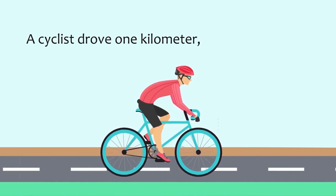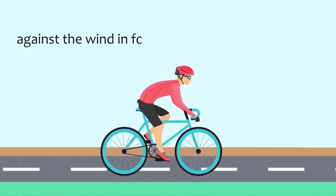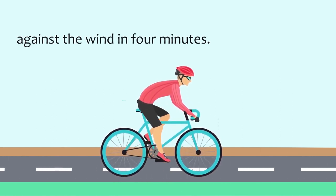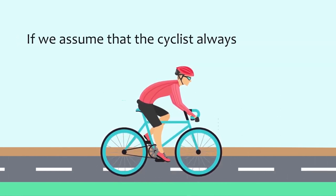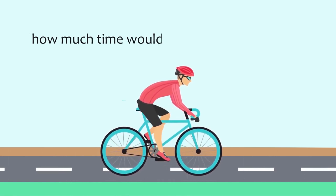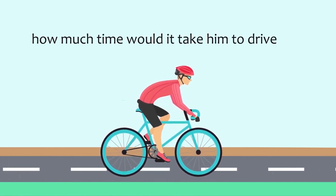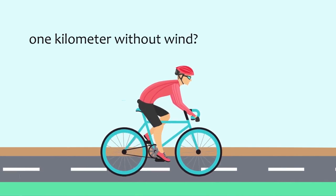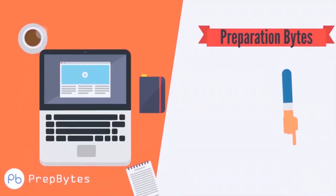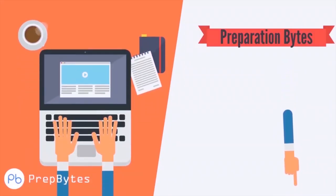A cyclist drove one kilometer with the wind in his back in three minutes, and drove the same way back against the wind in four minutes. If we assume that the cyclist always puts constant force on the pedals, how much time would it take him to drive one kilometer without wind?